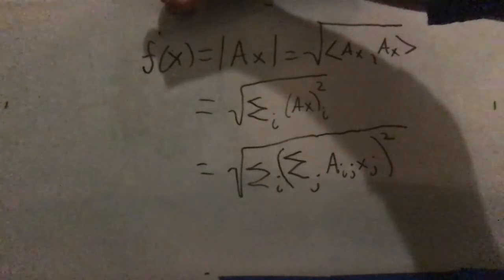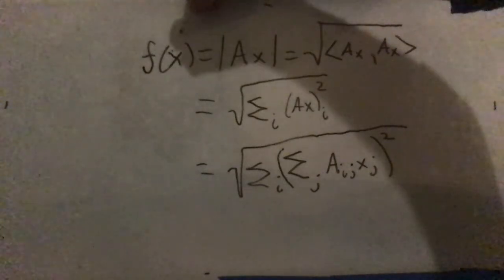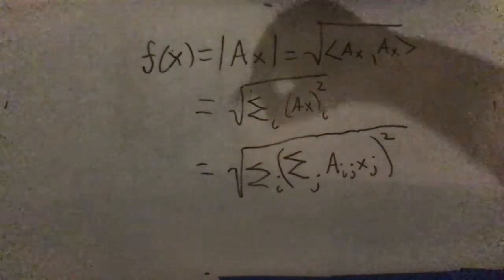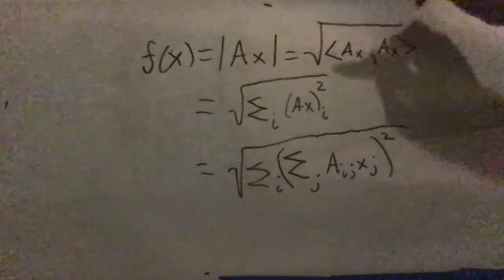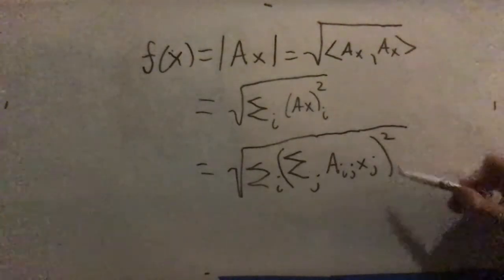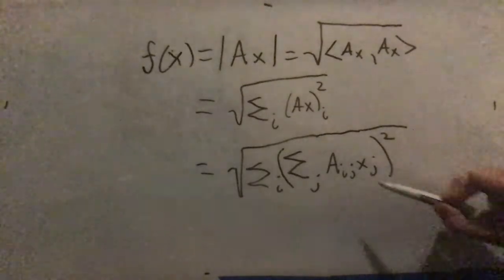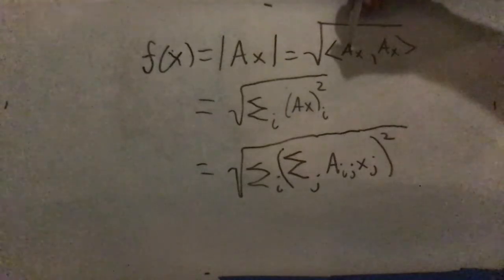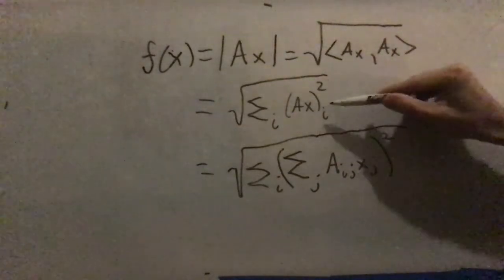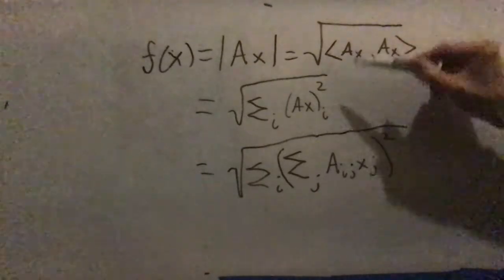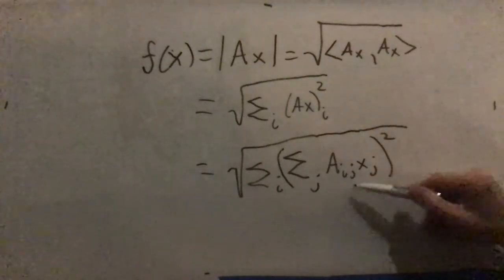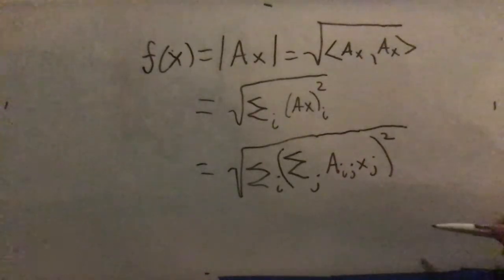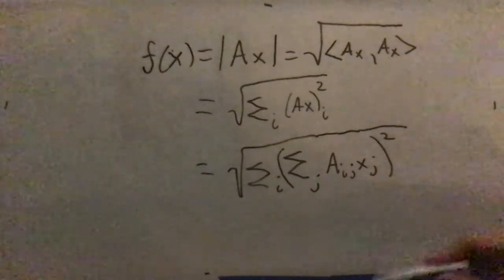f is just a scalar-valued function of n variables. So we could get rid of the matrix-vector notation and write out explicitly, in terms of all the components of x and A, what the length is. It's going to be the square root of the inner product of Ax with itself, which is a sum of the squares of the components of Ax, and each of those is itself a sum. So ultimately, it's just going to be the square root of a big sum of quadratic terms, but we're not going to start with that.